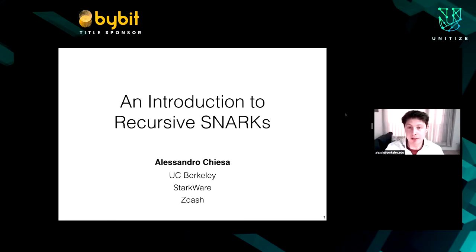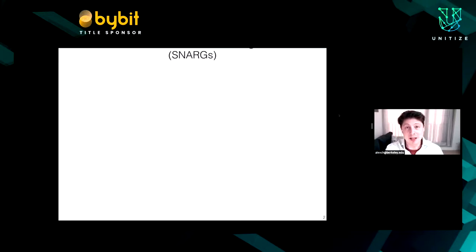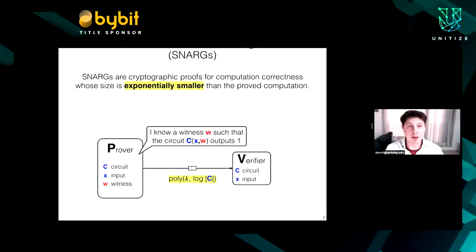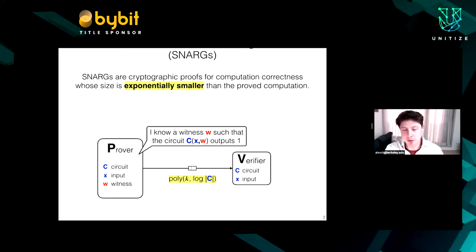First, let's start with the obligatory slide on SNARKs. We have two algorithms: the prover and the verifier. The verifier knows a circuit C, and an instance X, an input. The prover wants to prove to the verifier that they know a witness W that makes the circuit on input X and W output one. The key property of a SNARK is that the proof for convincing the verifier is very small — specifically, it is exponentially smaller than the size of the circuit, meaning logarithmic in it, and more precisely polynomial in the security parameter and polylogarithmic in the size of the circuit.